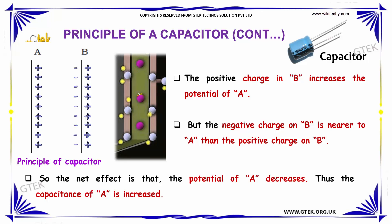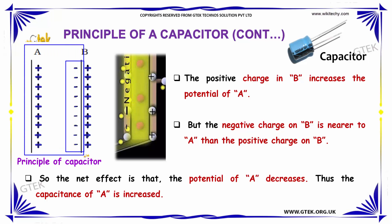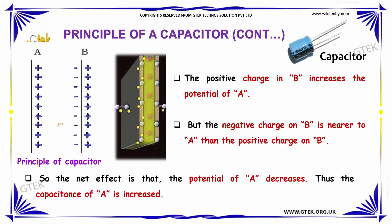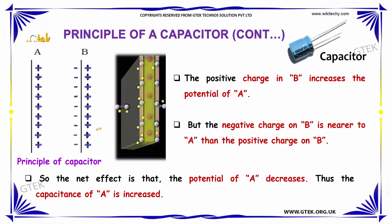The positive charge in B increases the potential of A. But the negative charge on B is nearer to A than the positive charge on B. So the net effect is that the potential of A decreases, and thus the capacitance of A is increased.